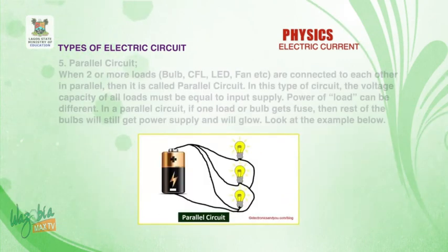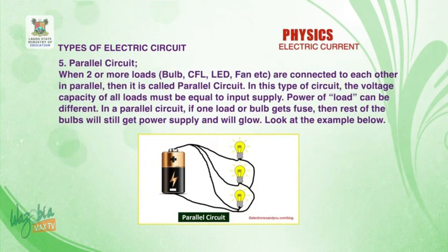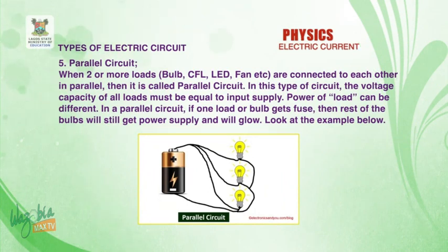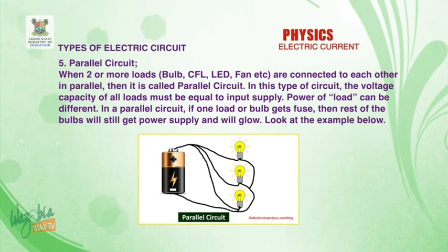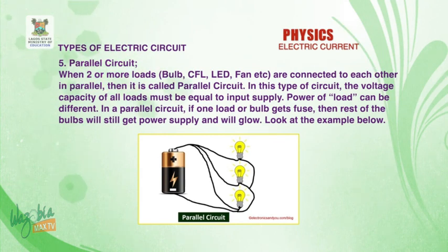Then parallel. When we talk about parallel circuits, bulbs are connected end to end to each other. In such a situation, you see the bulbs glow on. That is the fifth type of circuit connection that we have.